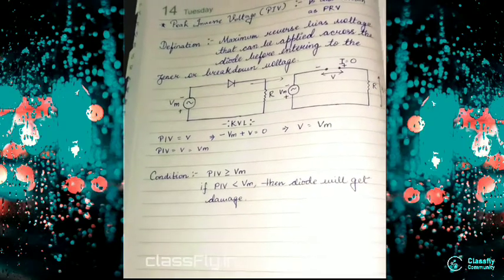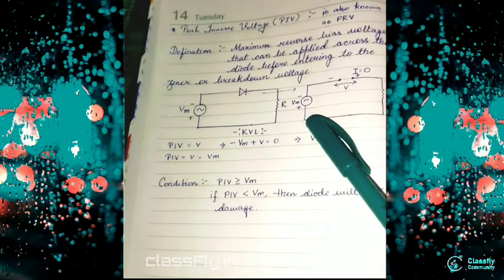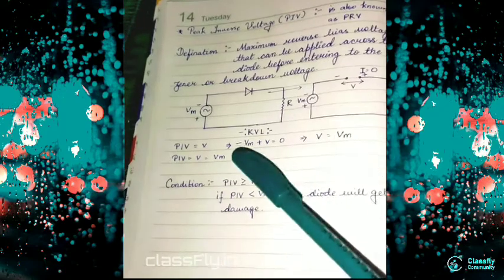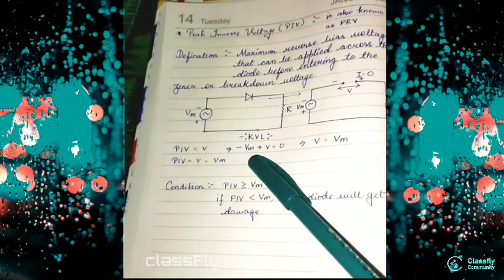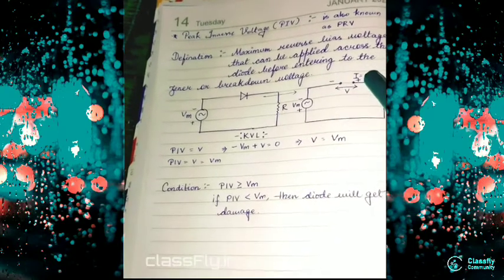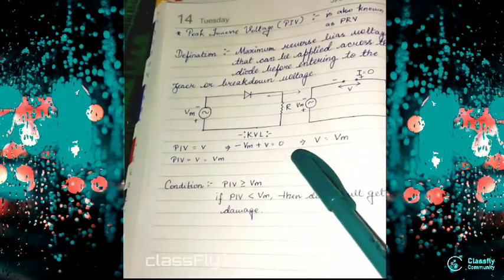In KVL, when voltage moves from positive to negative, we take it as negative, so we write -V_m. When it moves from negative to positive, we take it as positive. So we get -V_m + V = 0.